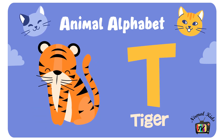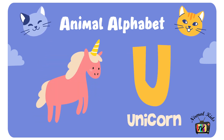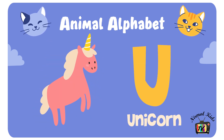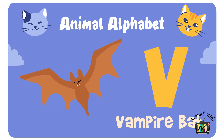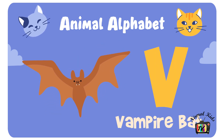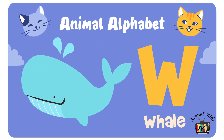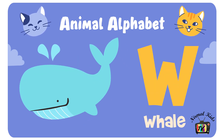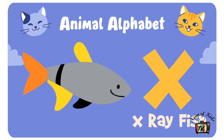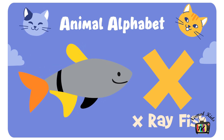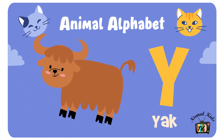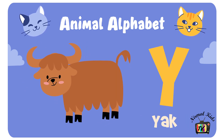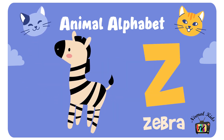T for Tiger. U for Unicorn. V for Vampire Bat. W for Whale. X for X-Ray Fish. Y for Yak. Z for Zebra.